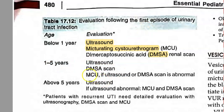For one to five years, do ultrasound, DMSA scan, and micturating cystourethrogram (MCU). If ultrasound and DMSA are abnormal, then you can add MCU. Otherwise, ultrasound and DMSA are enough. Above five years, do ultrasound and then you can discuss the other things.